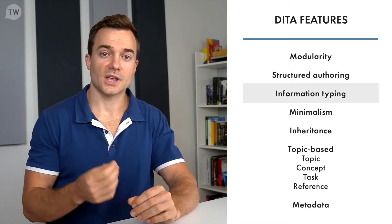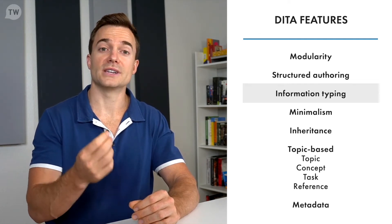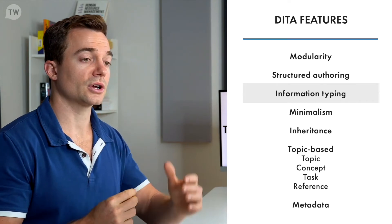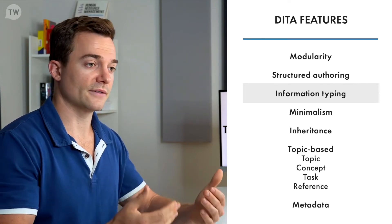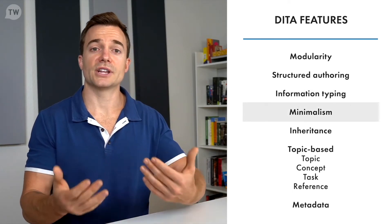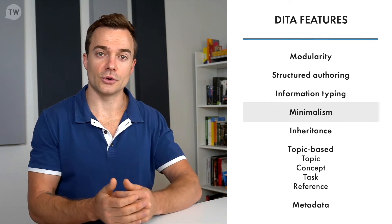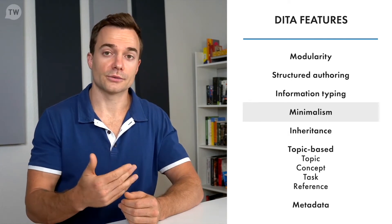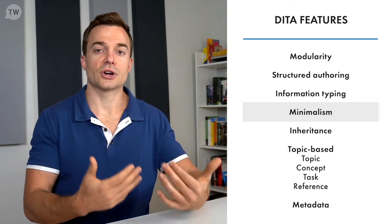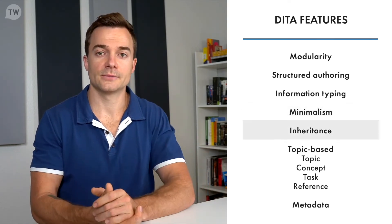DITA also features structured authoring, which defines and enforces consistent organization of information, reducing authoring time and increasing analysis time. Information typing structures information by topics with content models appropriate to the nature of the content — the three basic DITA information types are concept, task, and reference. DITA also incorporates minimalism — an approach that presents the reader with the smallest amount of information necessary to achieve the reader's goals, where the needs of the reader guide the information architecture and writing style.